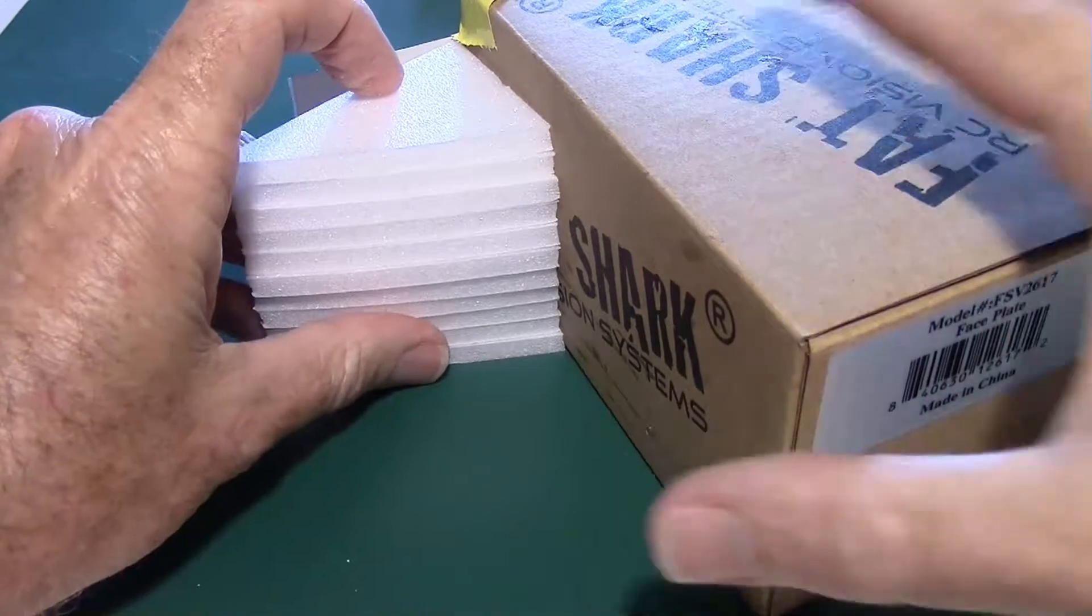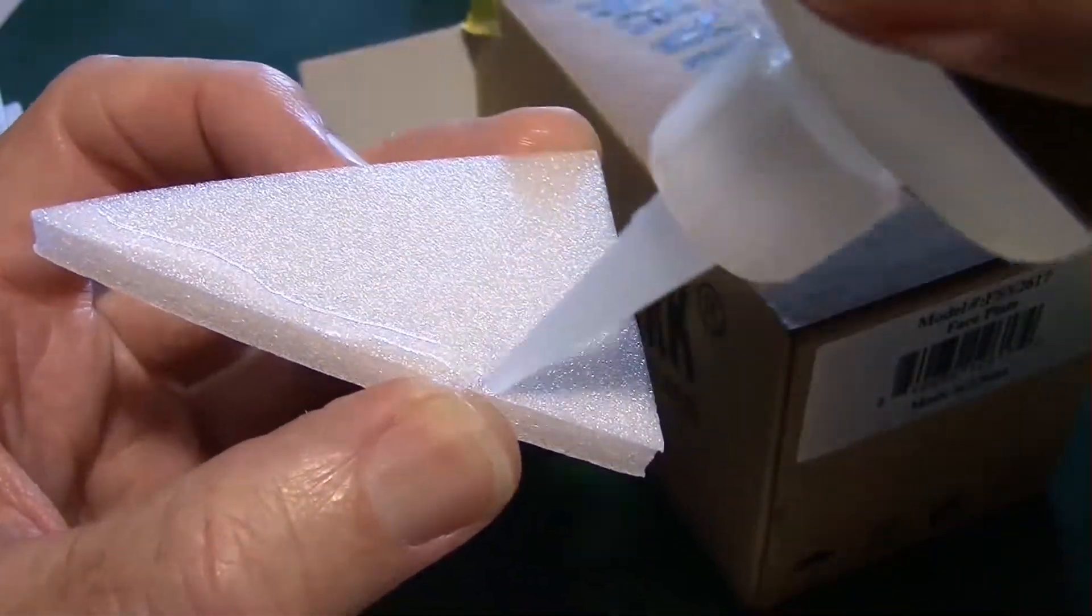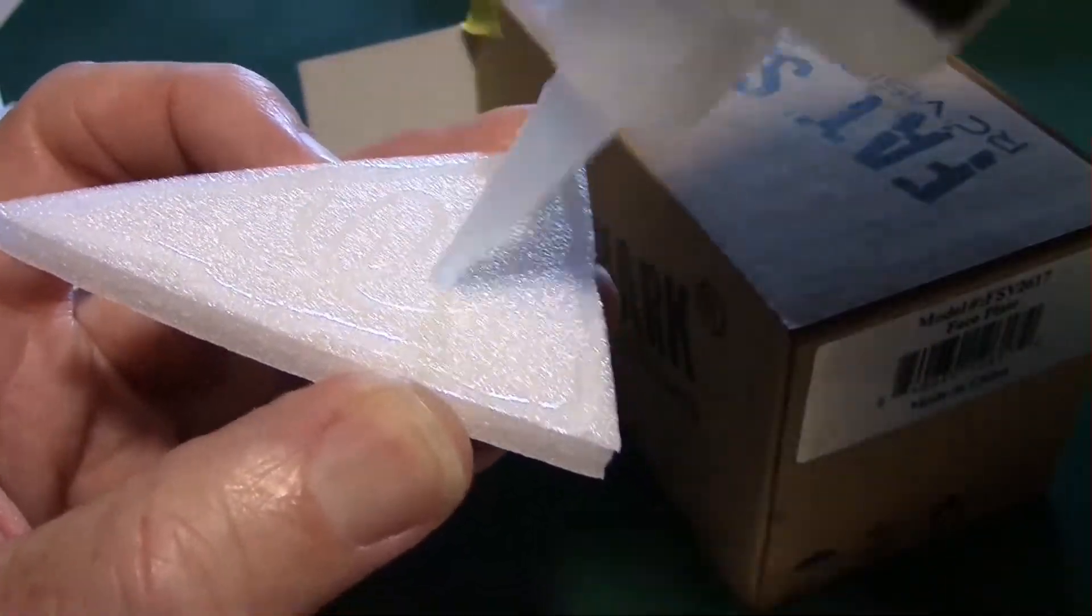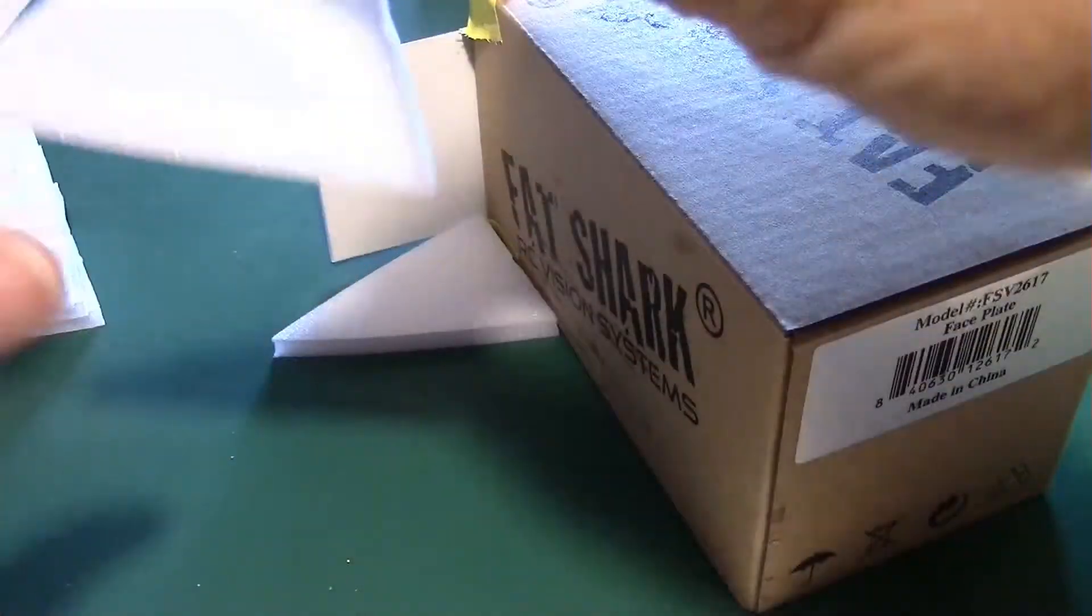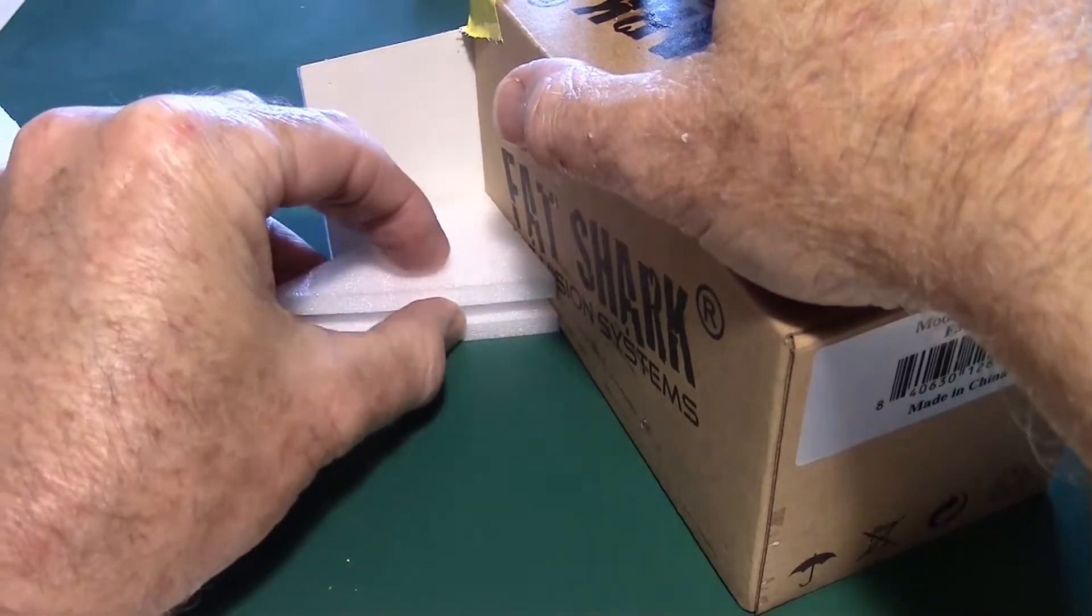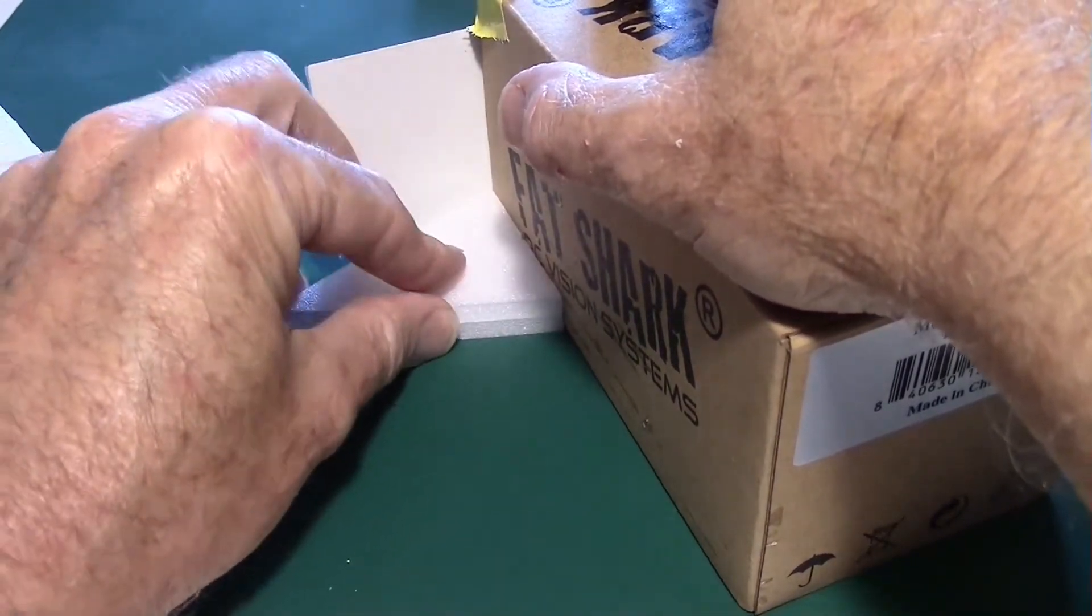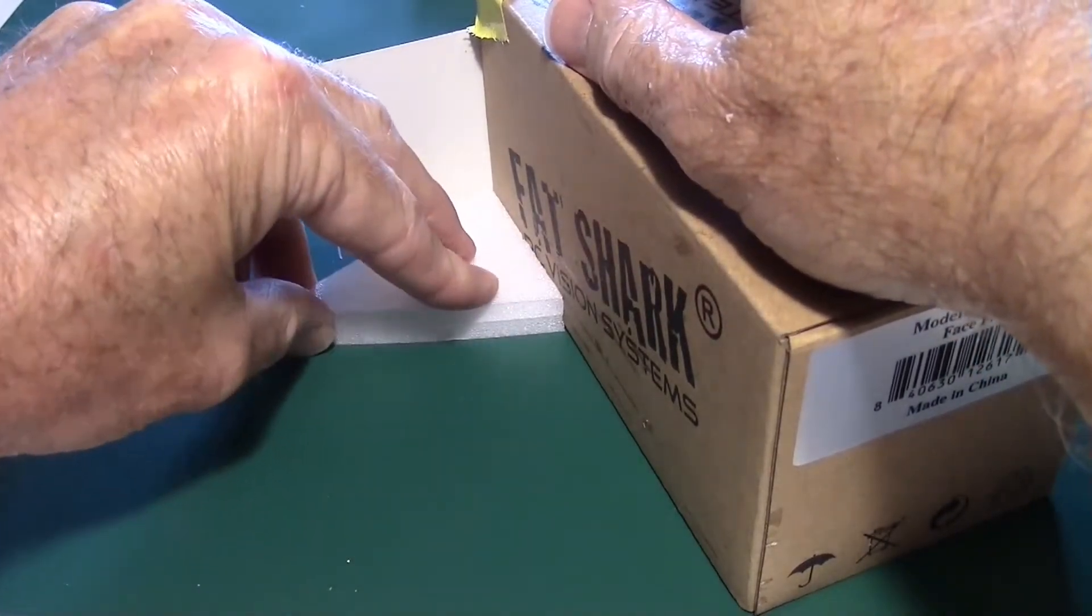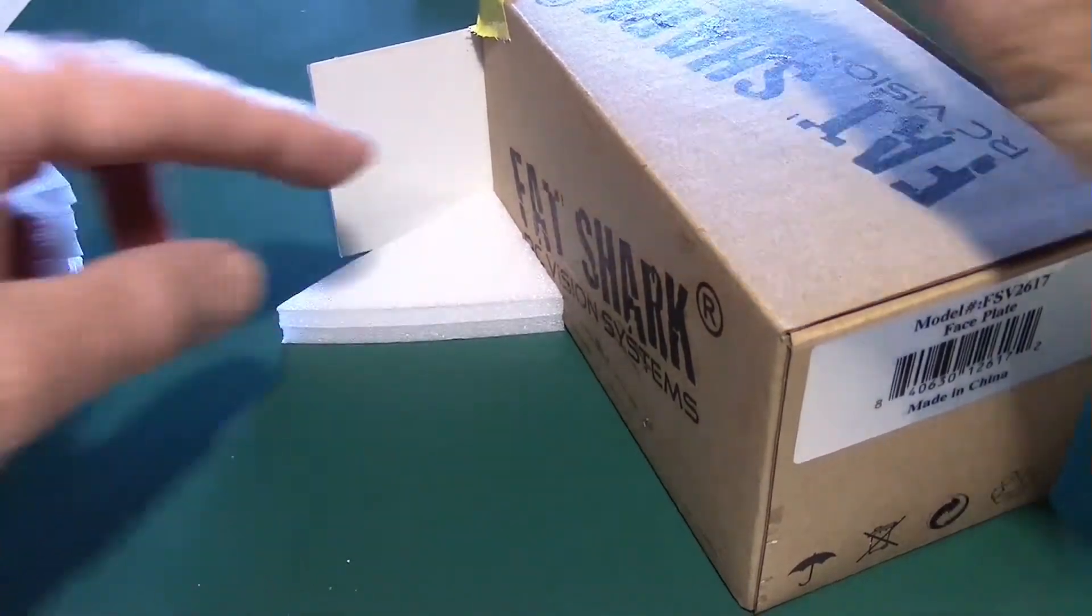Now we can start gluing them together. Basically the same process as before, just put a little glue around the outside edge, a little in the middle. Then place it on top of the other one. There's just a couple of seconds to get it all lined up. I'm pushing it into the corner and holding it against the box at the same time. We'll just repeat that process until we get them all done.